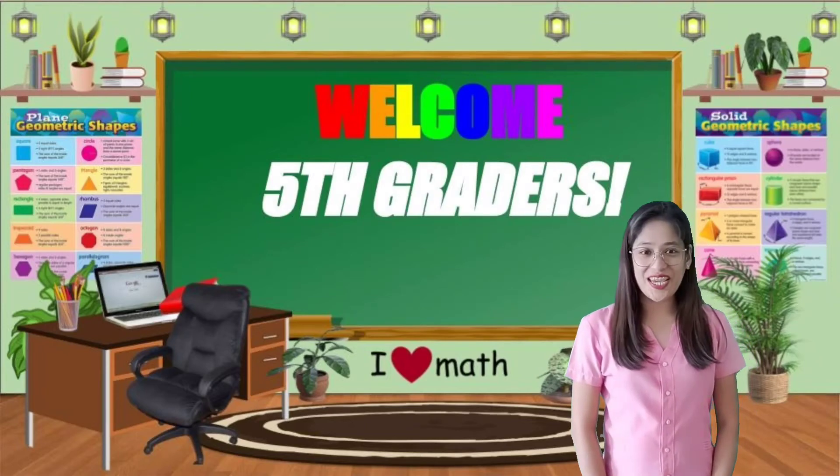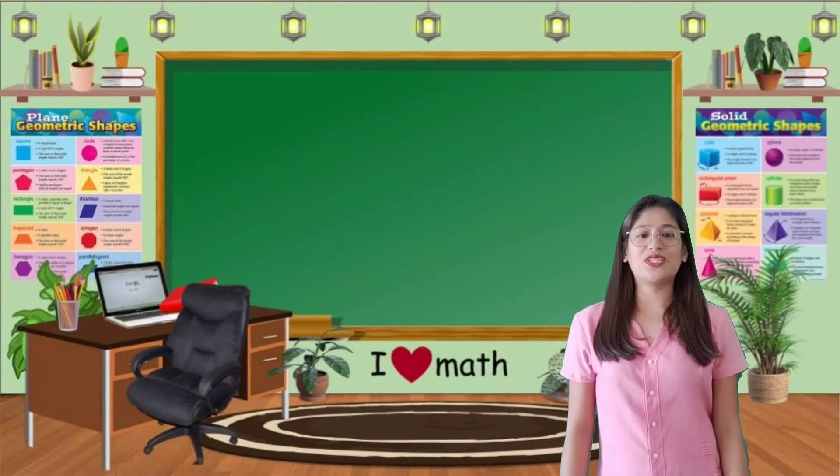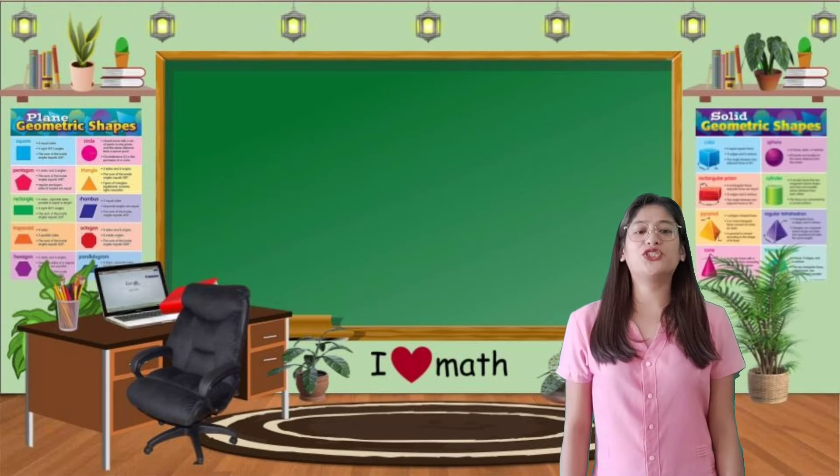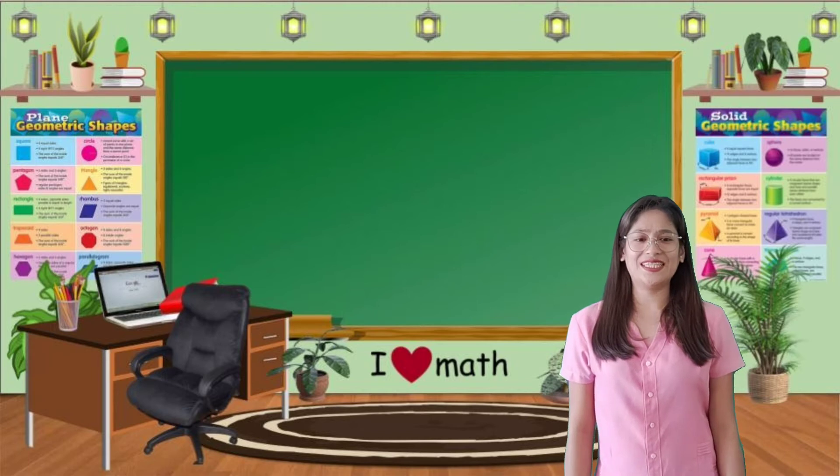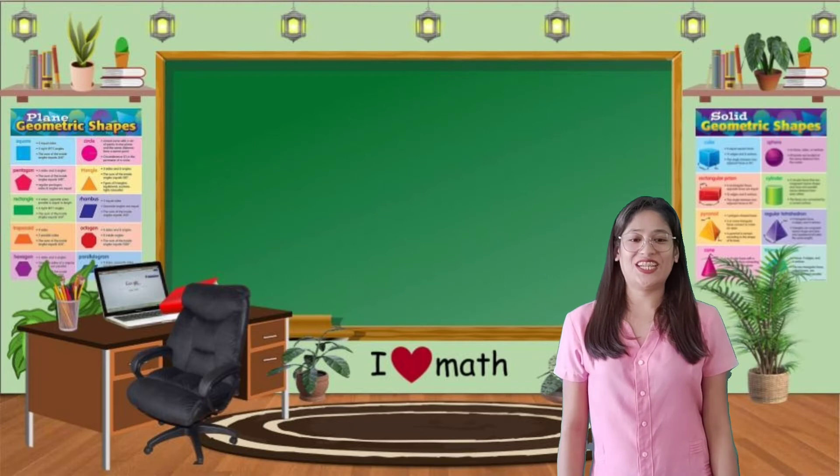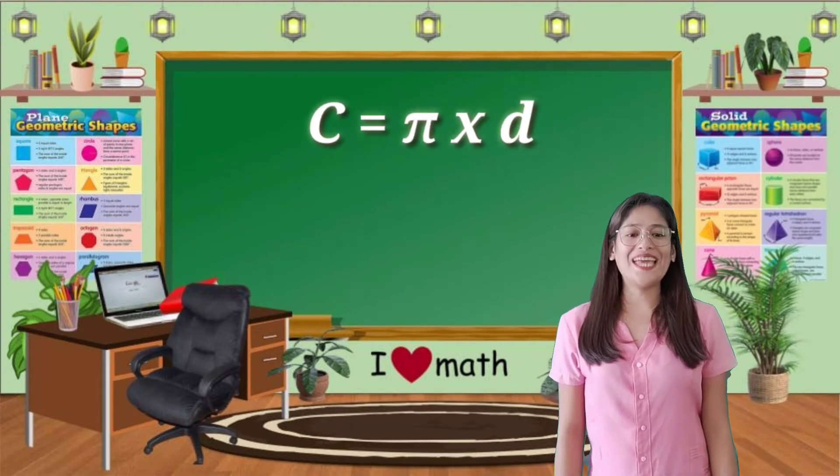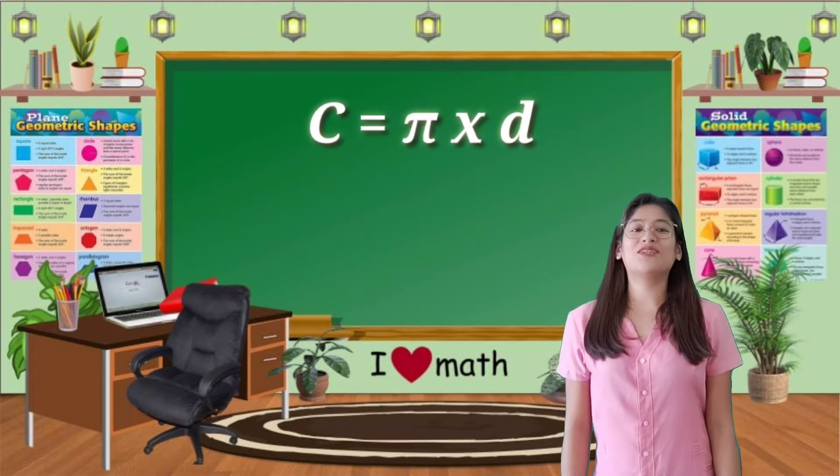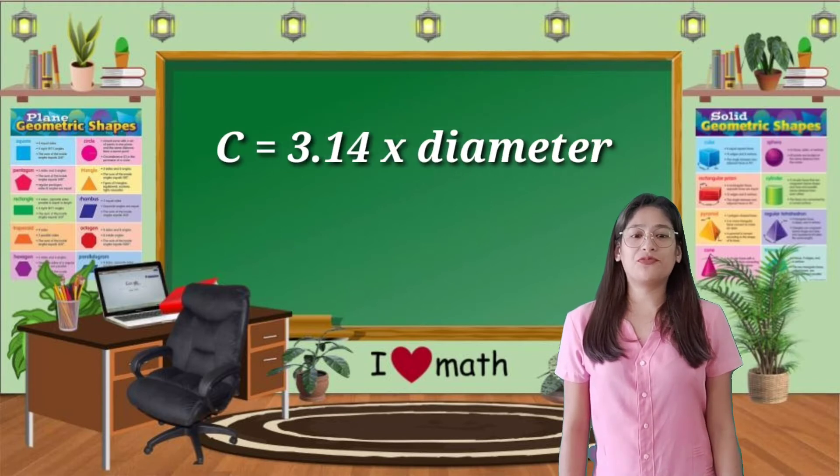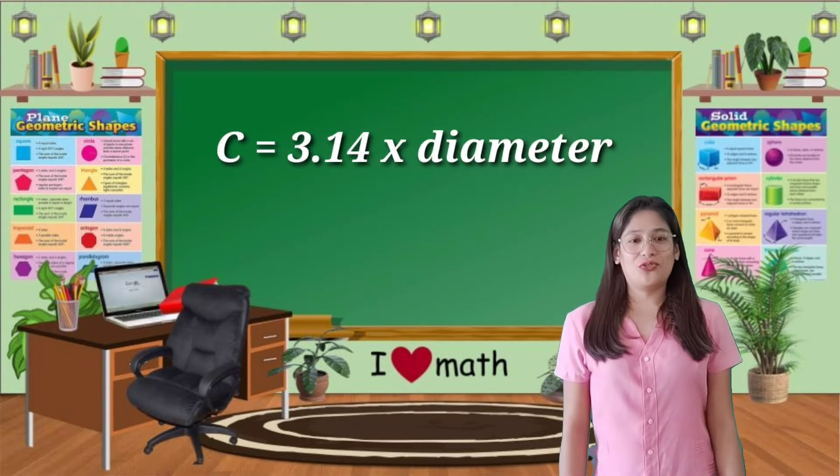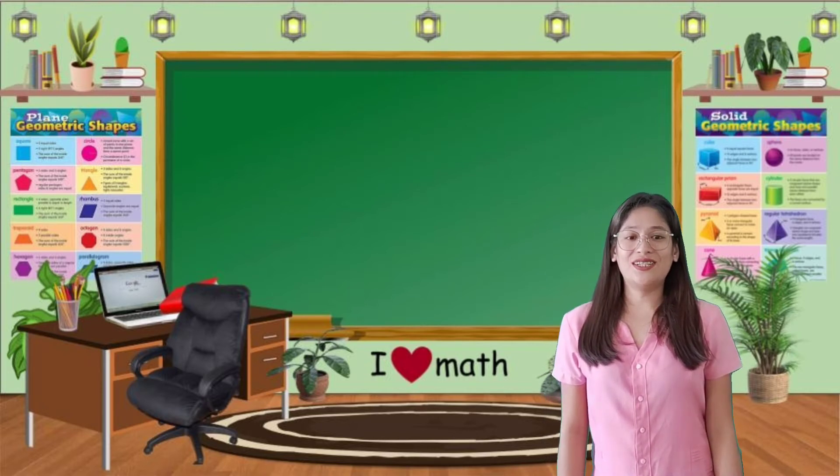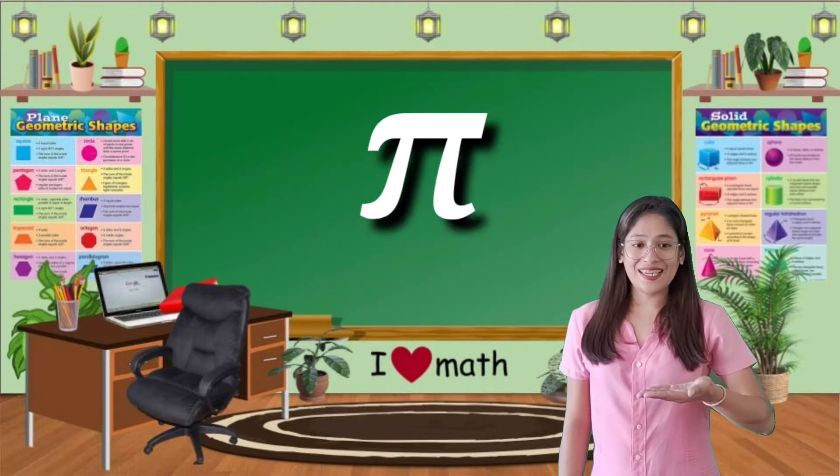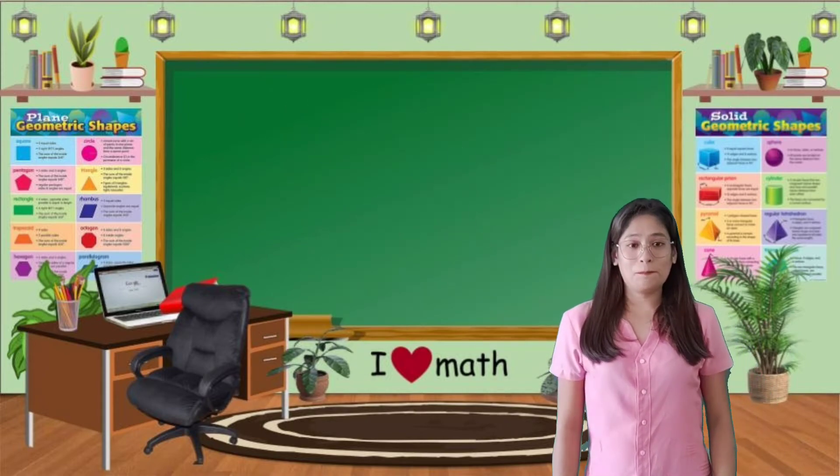Good morning children. On the previous lesson, we were able to understand that the ratio of the circumference of a circle to the diameter is the same for all circles. The circumference of any circle is about 3.14 times the diameter. The ratio is represented by the Greek letter pi, spelled P-I-E.